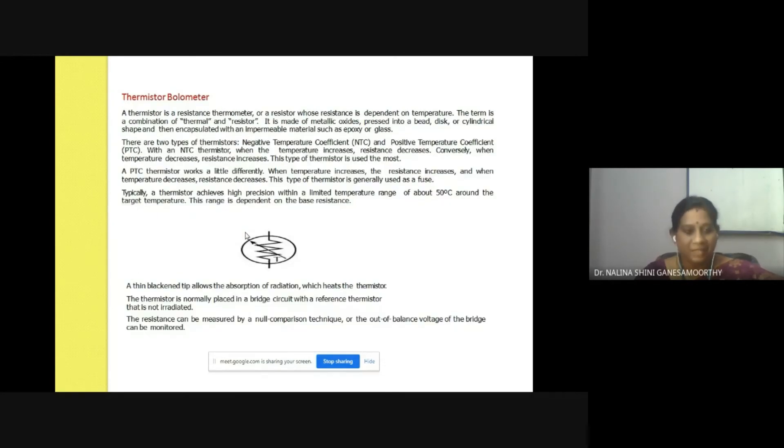The next one is the thermistor bolometer. Thermistor is a thermal resistor. You have NTC type thermistors, which are negative temperature coefficient of resistance, and PTC type thermistors, positive temperature coefficient. Thermistors are available in different types like beads, small discs, spherical shapes, and rod types. These are encapsulated with an impermeable material such as epoxy or glass. This is another temperature transducer.